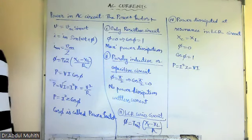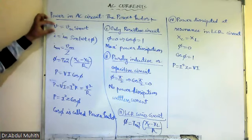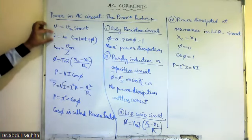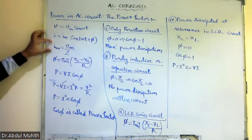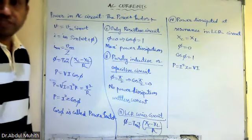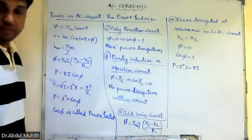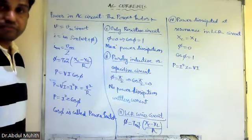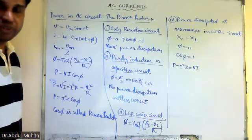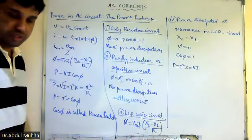In AC circuits, the input voltage is V = Vm sin(ωt) and the current is I = Im sin(ωt + φ), where Im = Vm/Z. The phase angle φ = tan⁻¹[(Xc − XL)/R], where Xc is capacitive reactance and XL is inductive reactance. We have four topics: purely resistive circuit, purely inductive, purely capacitive, LCR series circuit, and power dissipated.